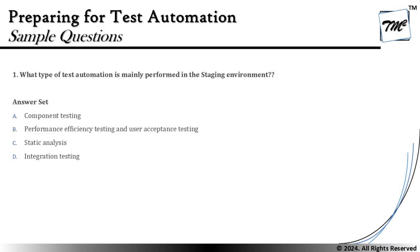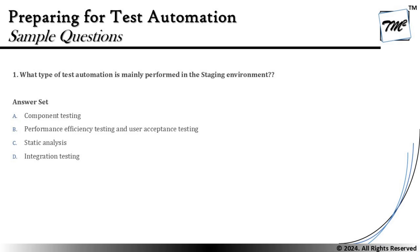For the second option — performance efficiency testing and user acceptance testing — when it comes to the staging environment, non-functional tests and acceptance testing can very much be performed there, because staging is more of a pre-production environment. Running a performance test with load and having users confirm requirements can all be performed right there. It makes a lot of sense that these tests are pushed to staging environments.